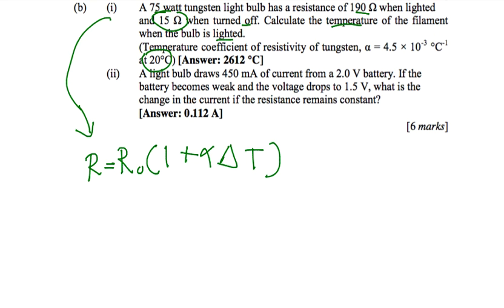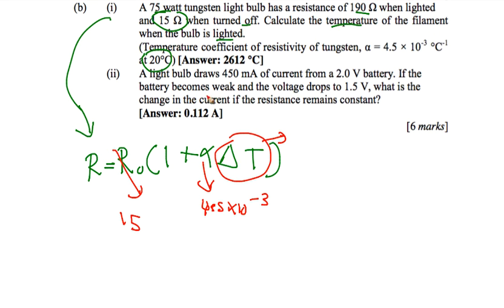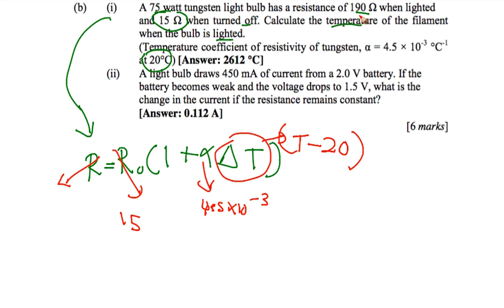R₀ is 15 ohm, alpha is 4.5 × 10⁻³, and ΔT refers to the final temperature T minus the initial temperature of 20°C. The R value when the bulb is lighted is 190 ohm. Using these values you can find the temperature T.